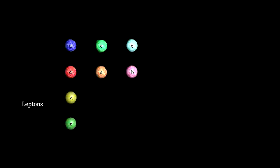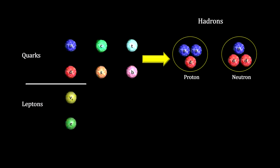We have the small light particles, like the electron and the neutrino, called leptons. And we have the quarks that make up the heavy particles, like protons and neutrons, called hadrons.